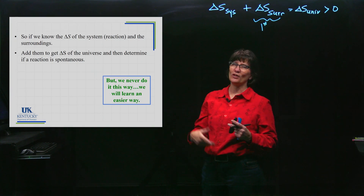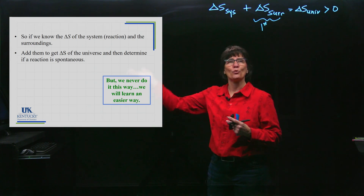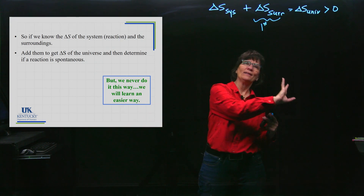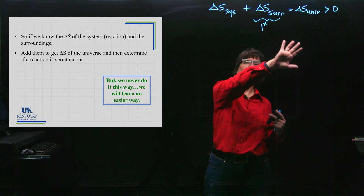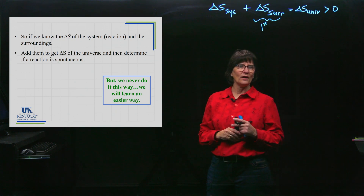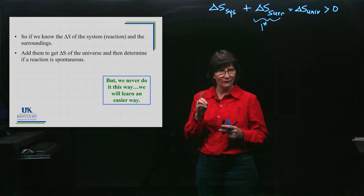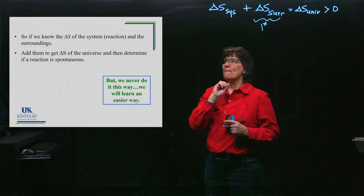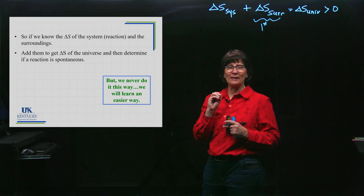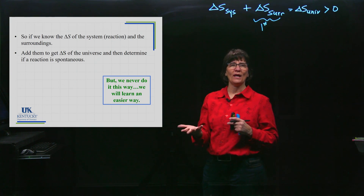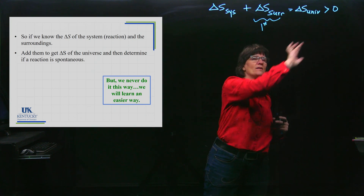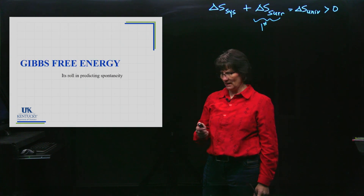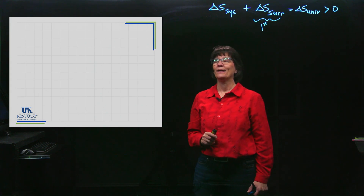The full process takes a few steps: first calculate delta H of the reaction, then calculate delta S of the surroundings, then calculate delta S of the system, and add them together. There will be a simpler method eventually, but the Second Law of Thermodynamics remains the foundation: delta S of the universe must be positive for a process to be spontaneous. Next, we'll discuss that easier way.